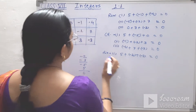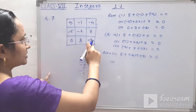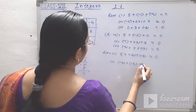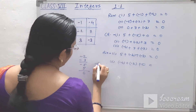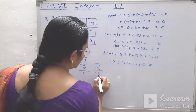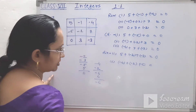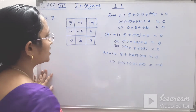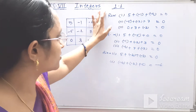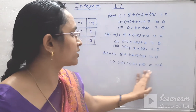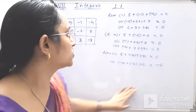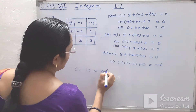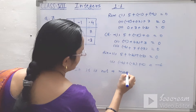In the second diagonal, we see minus 4 plus minus 2 plus 0. Minus 4 and minus 2 gives minus 6, and 0. So the answer is minus 6. Since not all sums are equal, it is not a magic square.